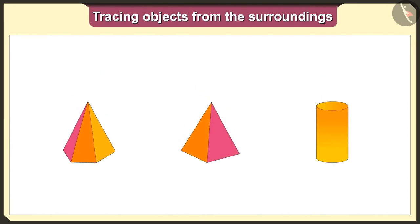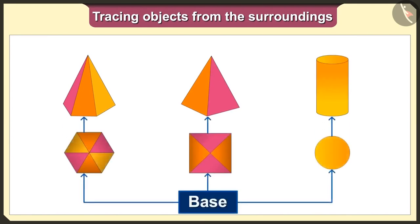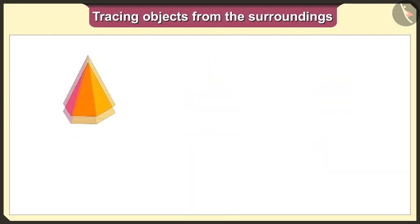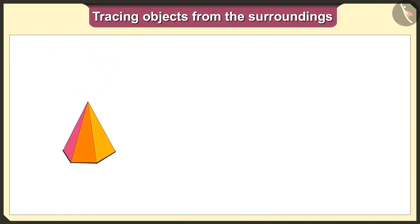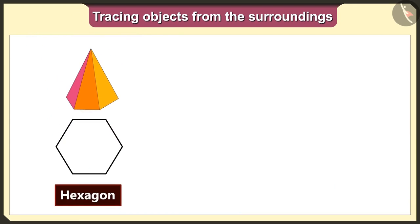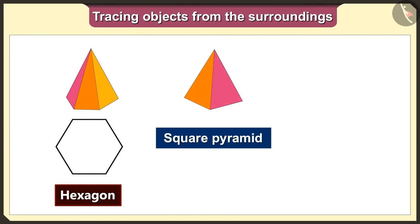You know what? When we trace any object, the shape we get will be the same as the base. So when we keep this hexagon pyramid on paper and trace it, we will get the hexagon shape. Now we will trace the square pyramid.